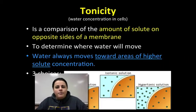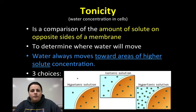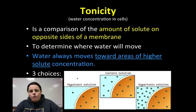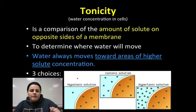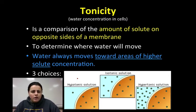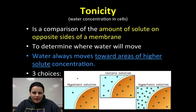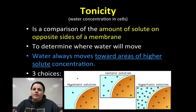Tonicity is a comparison of the amount of solute on the inside versus the outside of the cell, and this will determine where water moves. Water will move towards the area of higher solute concentration — in other words, water moves to where there's more stuff. The higher concentration is where water loves to move, and if water's moving, it's called osmosis.